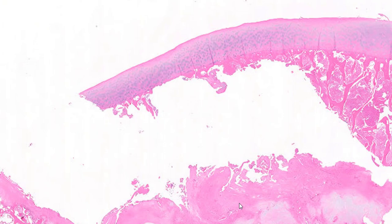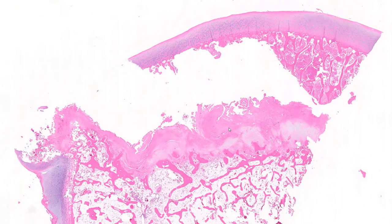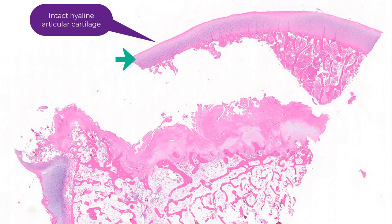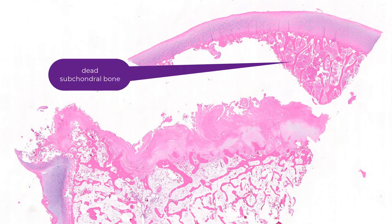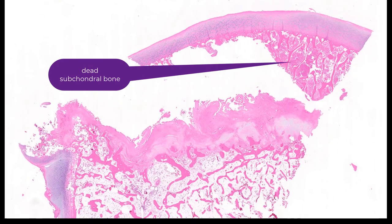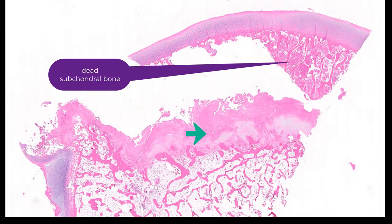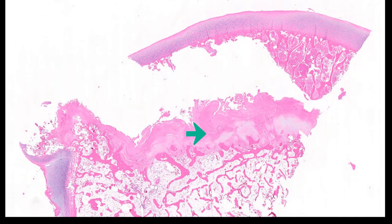This is a very typical low-power appearance of avascular necrosis. You'll see three layers essentially. The first layer is the intact articular cartilage that is alive. Right under that, the subchondral bone is dead. And the third layer, a distance away, is the interface between the dead bone and the living bone.